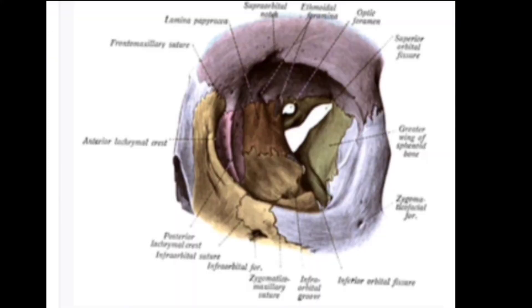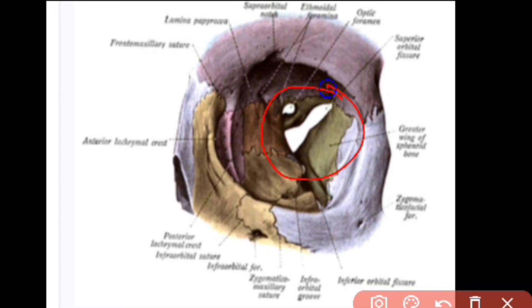This is the apex of the orbit, where all four walls converge, situated posteriorly towards the cranial fossa.